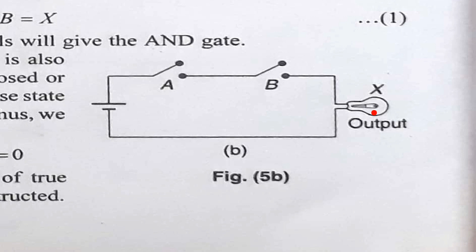If the bulb glows, then it is represented by 1. If the bulb is not glowing, then it is represented by 0. Now, if A is closed and B is also closed, then A is equal to 1 and B is equal to 1. Since these two switches are closed, current flows through the circuit and the bulb glows, so X is equal to 1. So if A is equal to 1 and B is equal to 1, then output X is equal to 1.